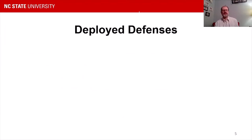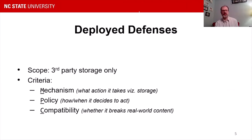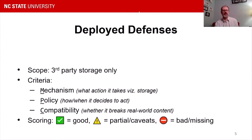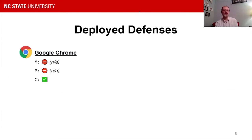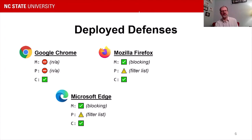Before implementing policy prototypes, we surveyed what is being deployed in production browsers. This summary is scoped only to how browsers defend against abuse of third-party storage. We look at the mechanisms used to prevent or mitigate third-party storage tracking, the policy that engages that mechanism, and an estimate of the compatibility results. Chrome traditionally does nothing to prevent third-party storage-based tracking but provides excellent compatibility. Microsoft Edge blocks third-party storage only of known trackers in a filter list, retaining good compatibility. Mozilla Firefox's general solution similarly depends on a filter list.